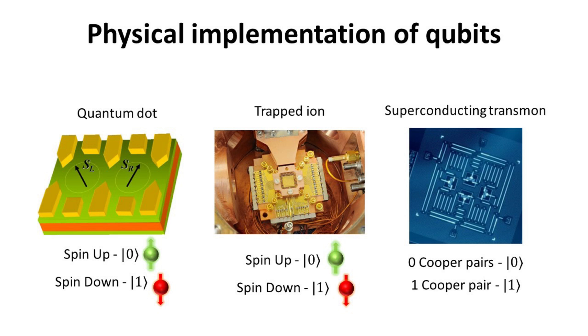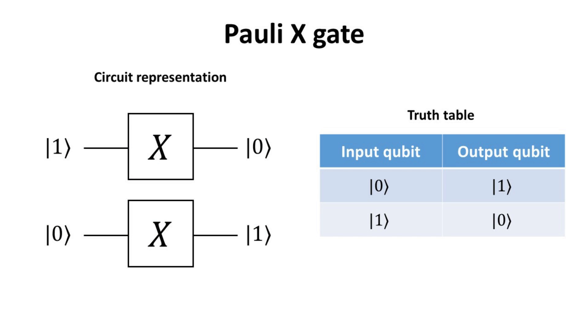We shall defer to future videos the discussion of these various physical implementation of quantum computing. Just like its classical analog, qubit can be manipulated using quantum logic gates. The quantum counterpart of the classical NOT gate is the Pauli X gate, which turns the ket0 into the ket1 and vice versa.